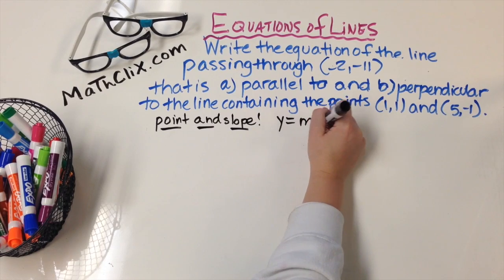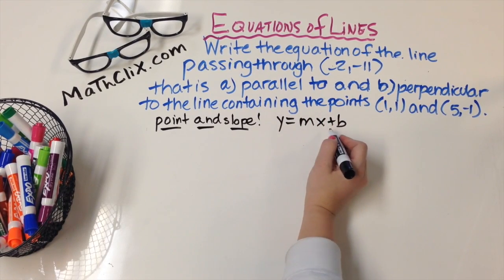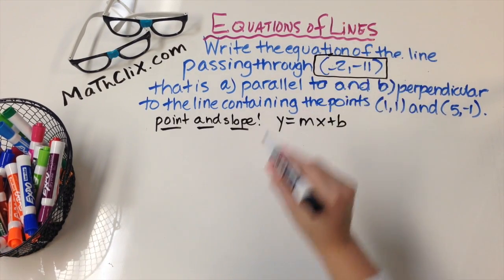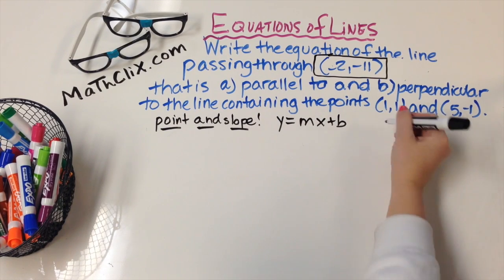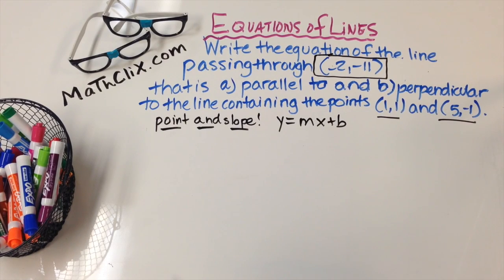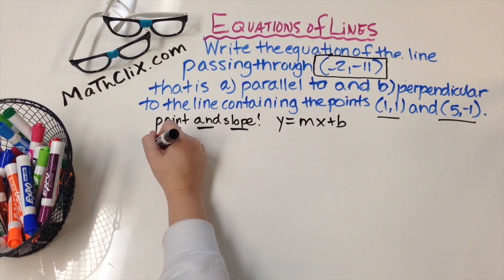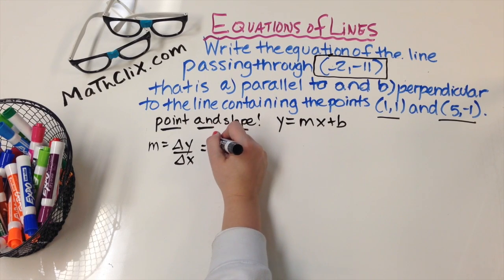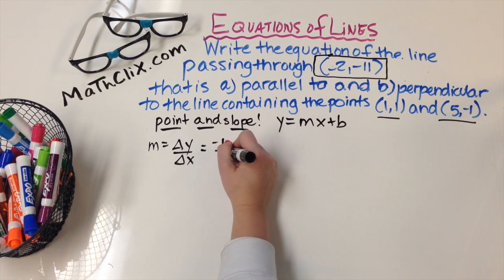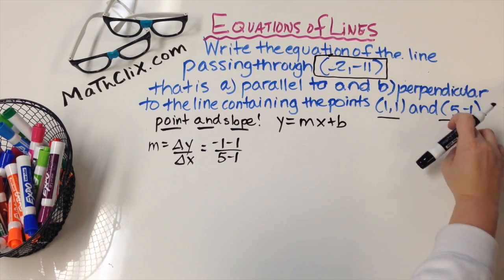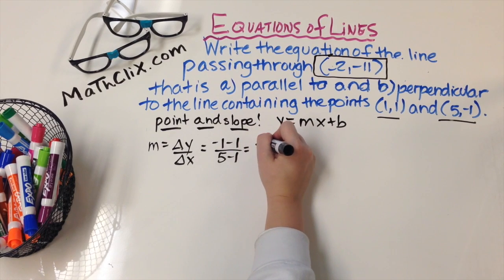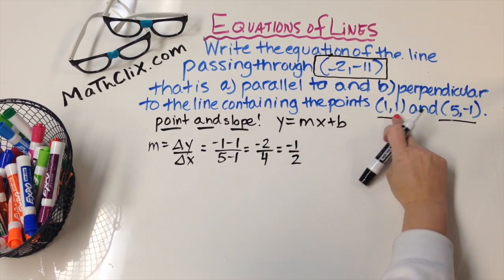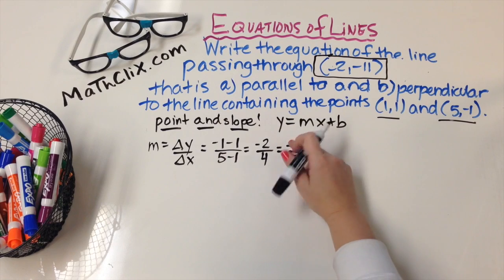You can use y equals mx plus b — this is the slope-intercept form of the equation of a line. We're given a point, so we have our negative 2, negative 11. And anytime you have two points, you can always find a slope. Using the slope formula — change in y over change in x — that's negative 1 minus 1 over 5 minus 1, which gives us negative 2 over 4, which is negative one half. So this line through those two points has a slope of negative one half.